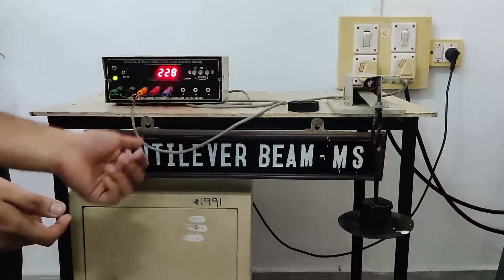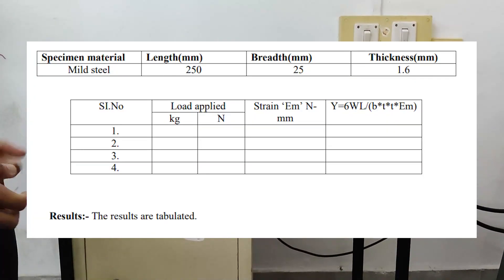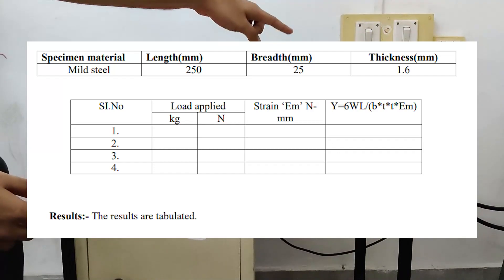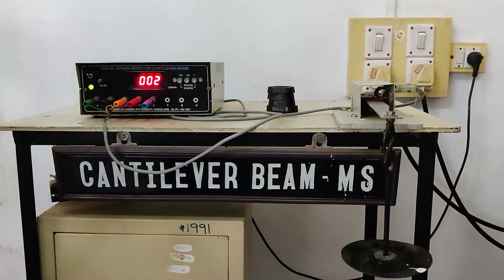Now we take all the values recorded over here and then make a tabular column in the records. With that we calculate the Young's modulus that has been applied on this mild steel.